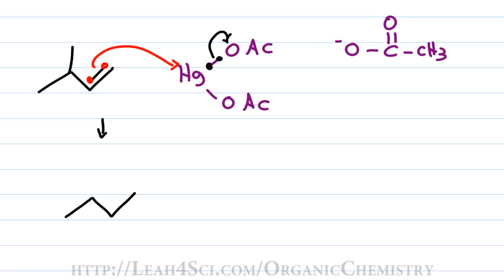To show the product, we redraw the carbon skeleton but now we have a question of do we add mercury to the primary carbon or to the secondary carbon? This is a Markovnikov addition reaction because we have that fleeting carbocation forming and Markovnikov's rule says you form the more stable intermediate putting the carbocation on the more substituted carbon.